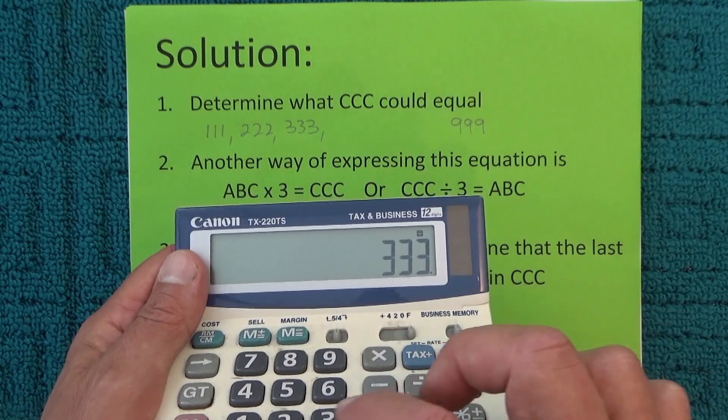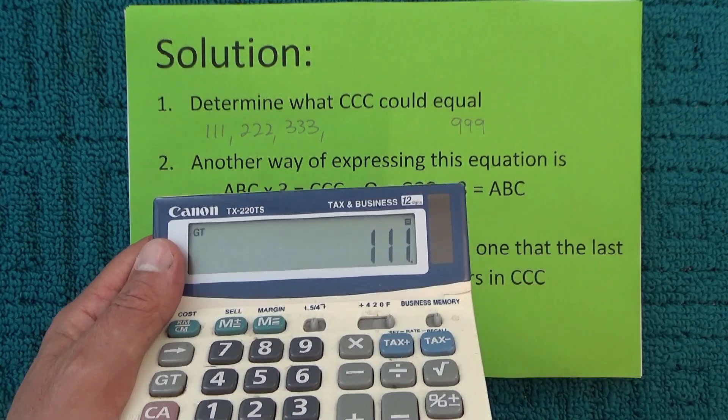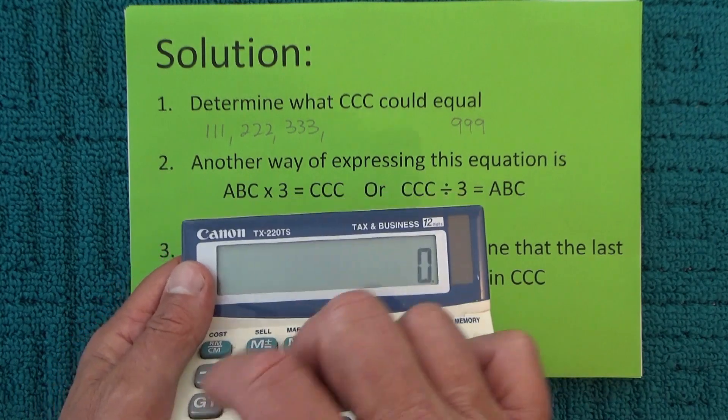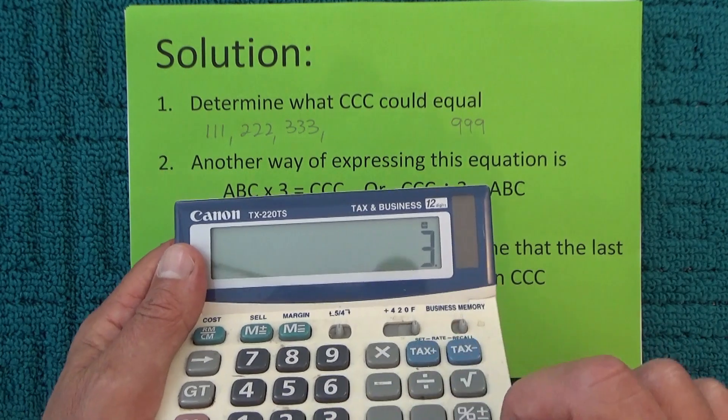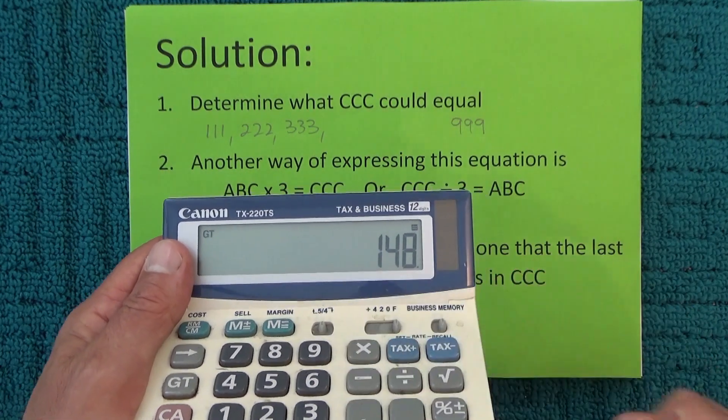333 divided by 3 has a last digit of 1, so that's no good. Then 444 divided by 3 gives us 148.